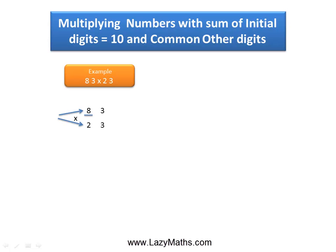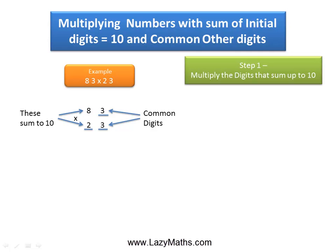As you can see, 8 and 2 add up to 10 and 3 and 3 are common digits, so we can apply this shortcut. The first step is to multiply the digits that add up to 10, which is 8 and 2. Multiplying 8 times 2 we get 16.